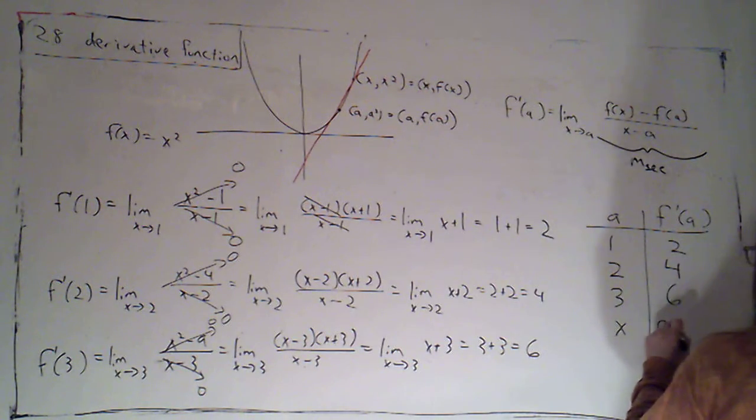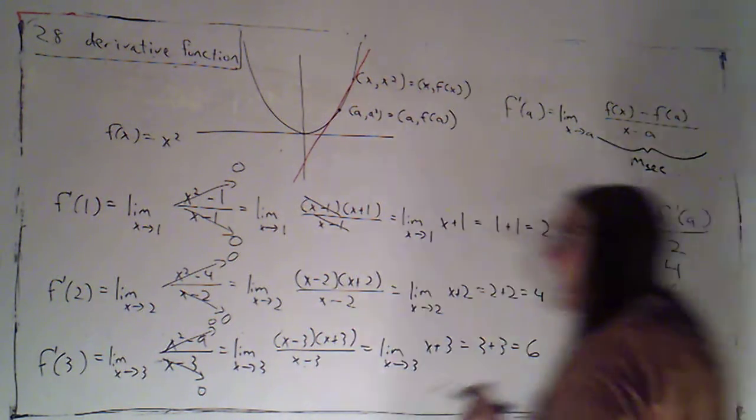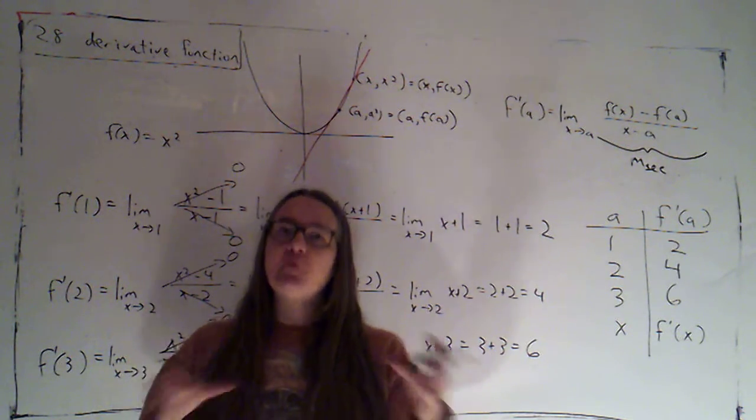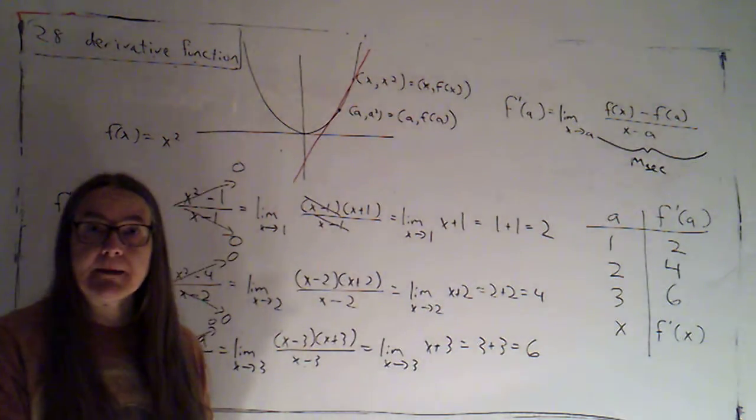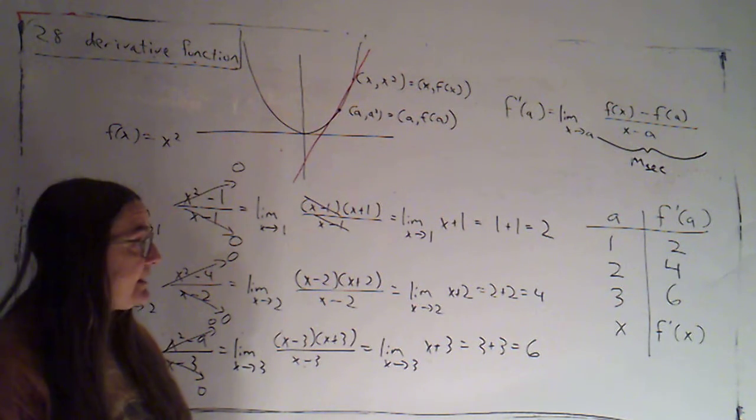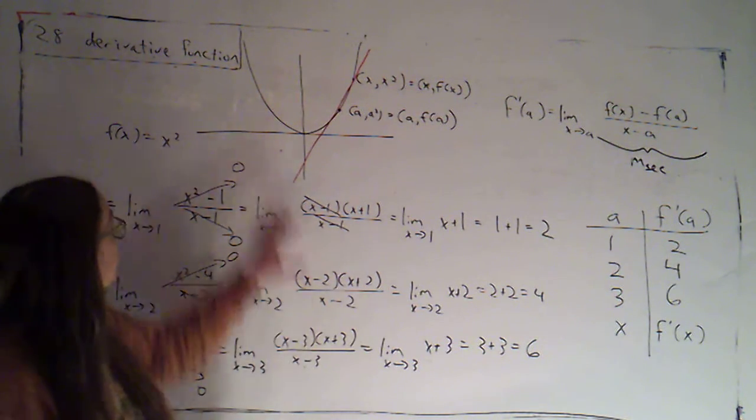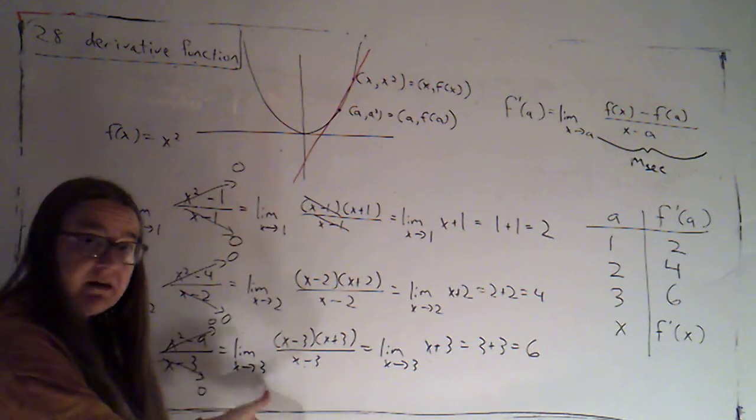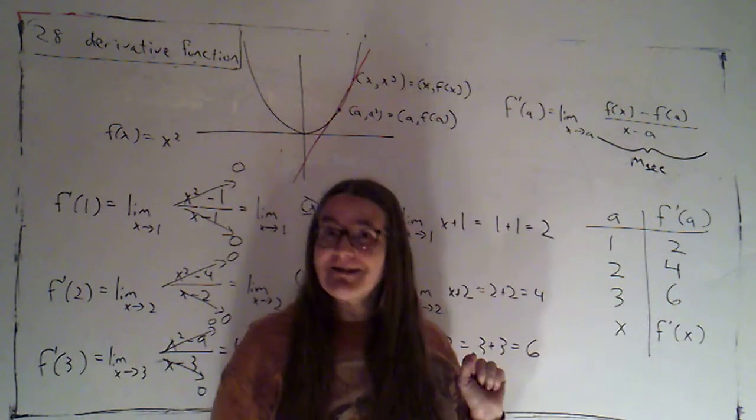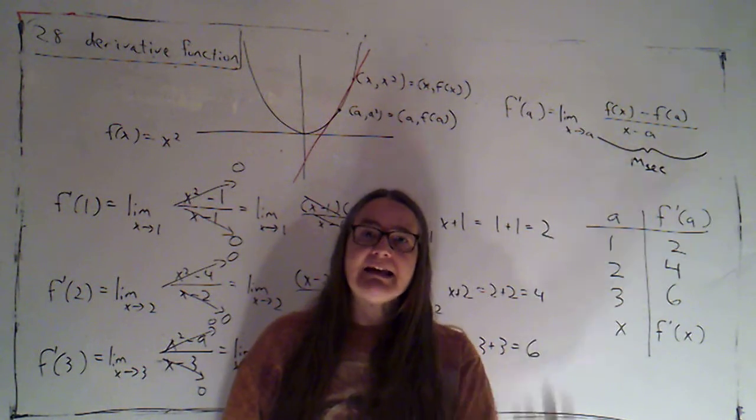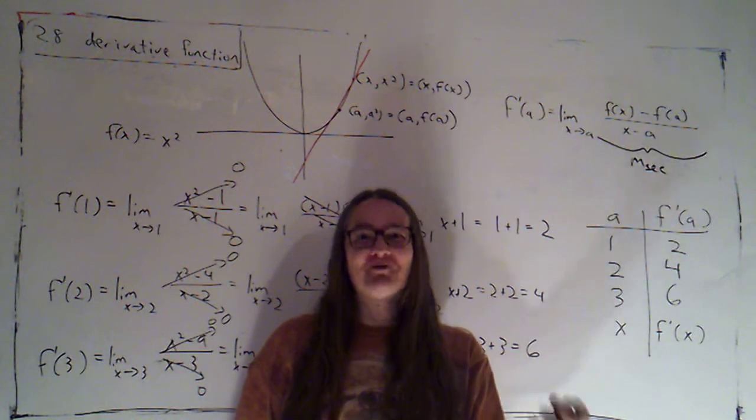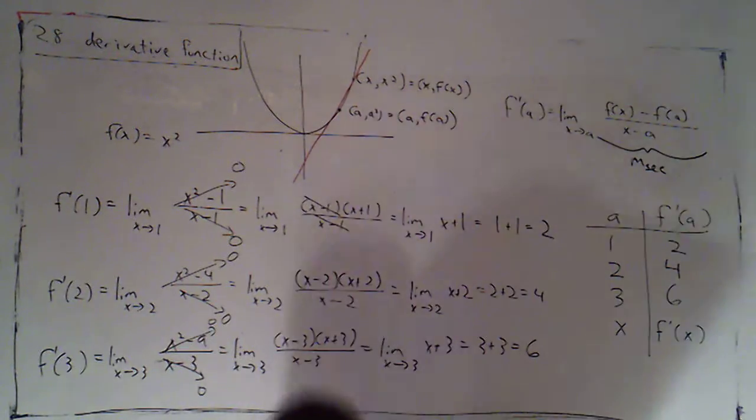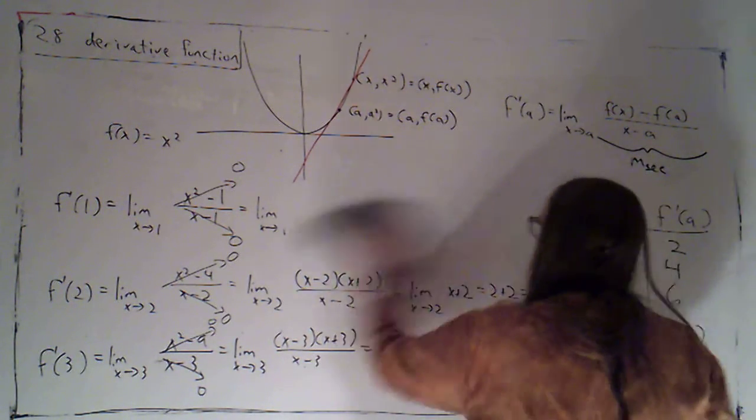And then what I'm going to find is f prime at x. I'm going to find a formula that will give me the slope of the tangent line at that point. If I'm successful in doing that, then when I want to evaluate the derivative of this function at 5, I wouldn't have to do a new limit. I could just plug 5 into this formula. So it's a way of calculating infinitely many derivatives at once by just choosing an arbitrary point x.